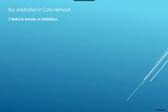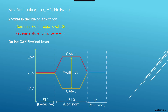CAN bus has two states to decide on the arbitration: a dominant state with logic zero, and a recessive state with logic level one. On a CAN physical layer, a dominant bit zero will occur when there is a voltage difference between CAN high and CAN low of around 2 volts. The recessive bit will occur when there is no voltage difference between CAN high and CAN low. In the dominant state, CAN high is at 3.5 volts and CAN low is at 1.5 volts, giving a voltage difference of 2 volts, which represents the dominant state or bit zero.